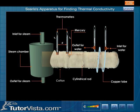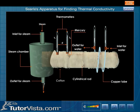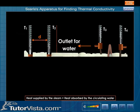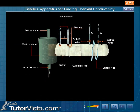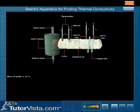To determine the coefficient of thermal conductivity, pass steam through one end and water through the coiled copper tube. Record the temperatures of the incoming and outgoing water using thermometers T3 and T4. At steady state, the heat supplied by the steam equals the heat absorbed by the circulating water — that is, all thermometers show fixed but different temperatures. Let m be the mass of water flowing in time t seconds.